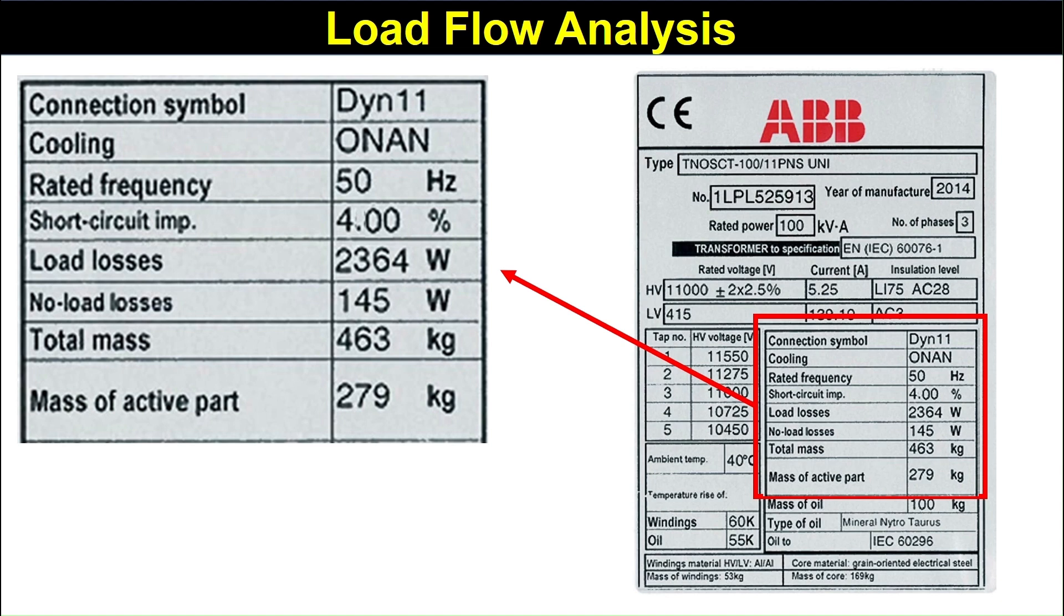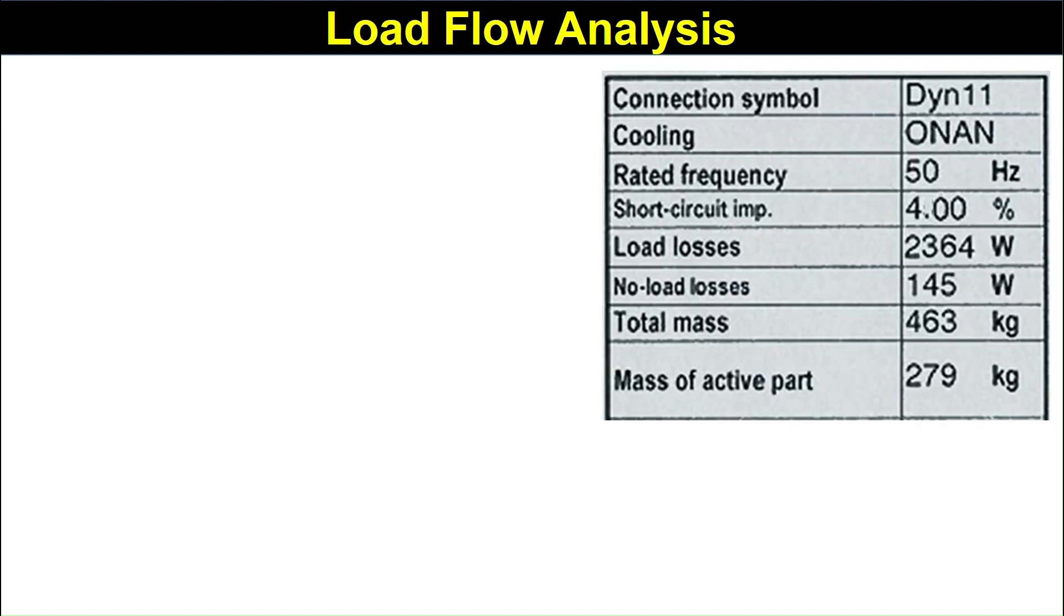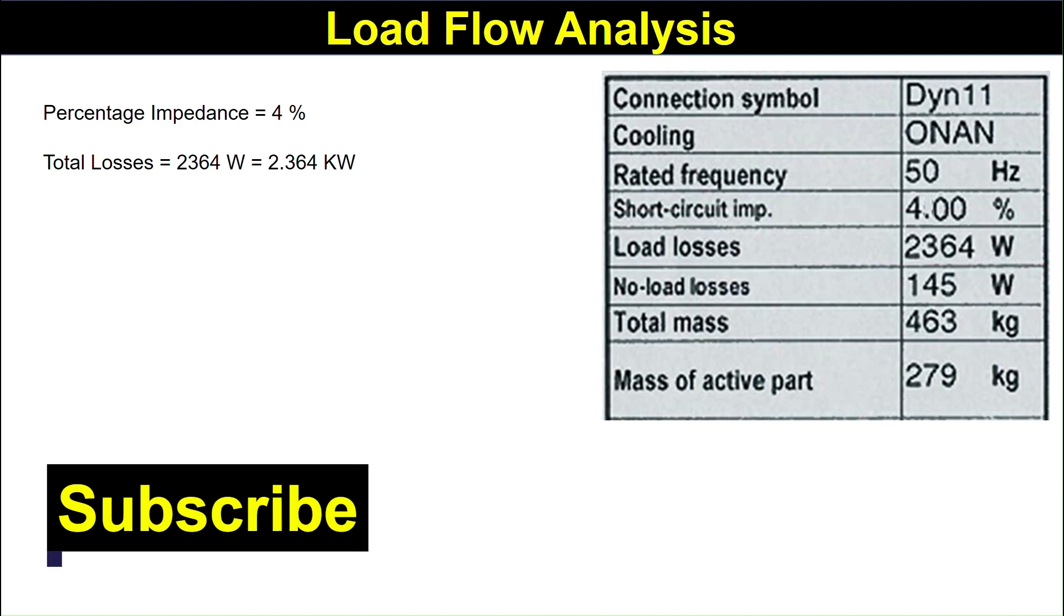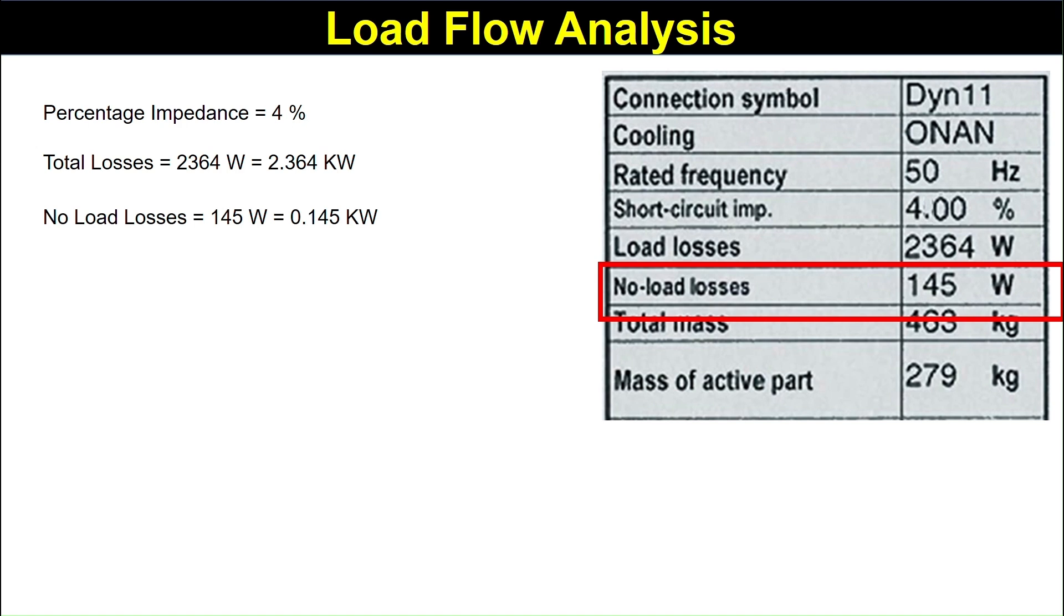How we calculate the X by R ratio of %X or %R? Percentage impedance is 4%. It is mentioned in the nameplate. Similarly, the total loss is 2364 watt which becomes 2.364 kilowatt. And no load loss is 0.145 kilowatt.